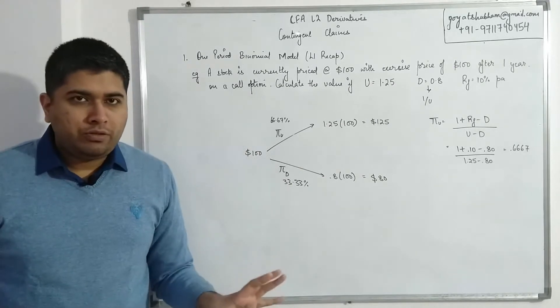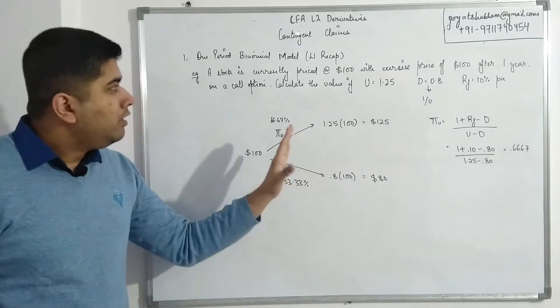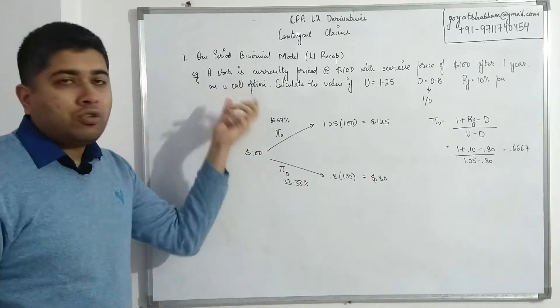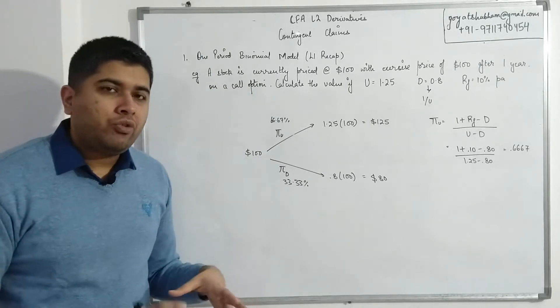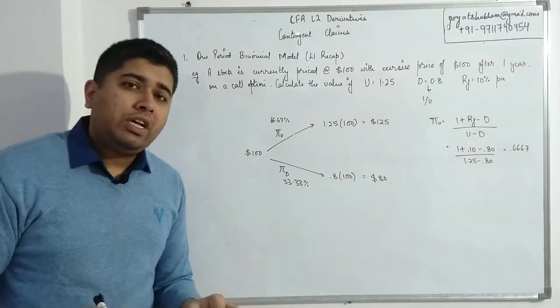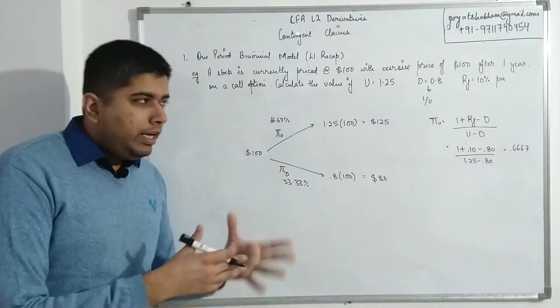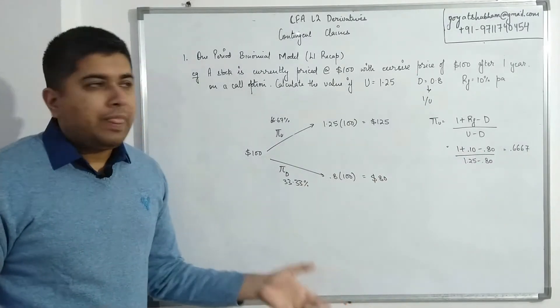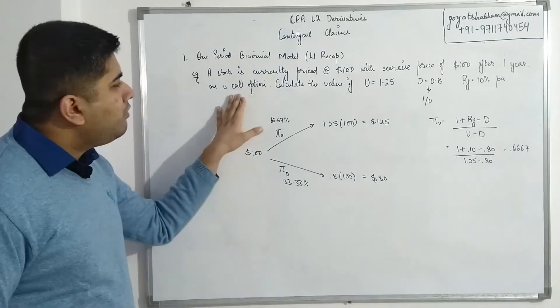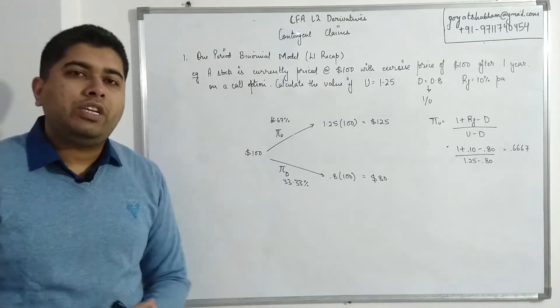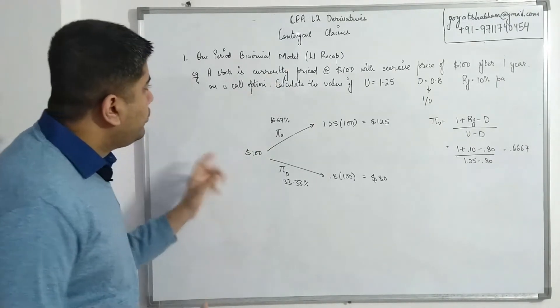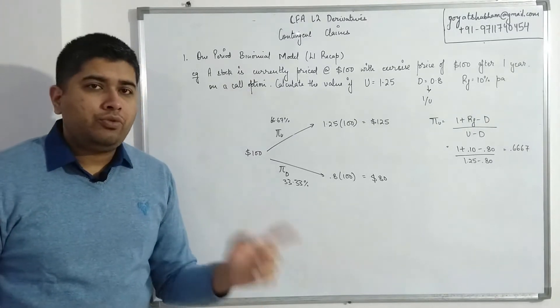Now so far we haven't introduced any sort of option, because till this part, whether the question says call option or put option, your process is going to be exactly the same. All I've done is I've just represented the information about the underlying in a binomial tree structure. From this point on, whatever the option is in your question, if it says call option you'll use that, if it says put option you'll use that.